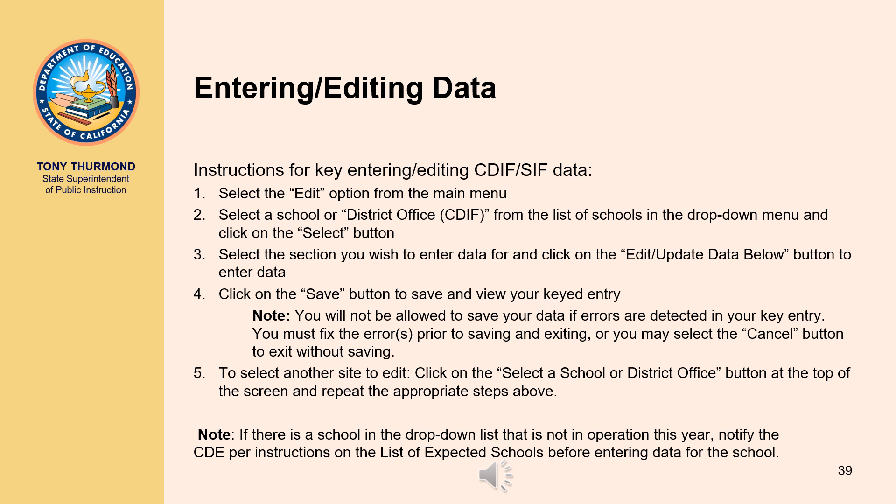Once the system loads the school or district office information, a screen showing the available sections for you to edit will be displayed. Select the section you wish to enter data for and click on the Edit/Update Data Below button. Click the Save button to save and view your keyed entry, or click the Cancel button to exit without saving. Note: if an error is detected in the data entered, a note with an explanation of the error will be displayed at the top of the screen. You will not be allowed to save and exit if errors have been detected; you must fix the errors prior to saving or click Cancel to exit without saving.